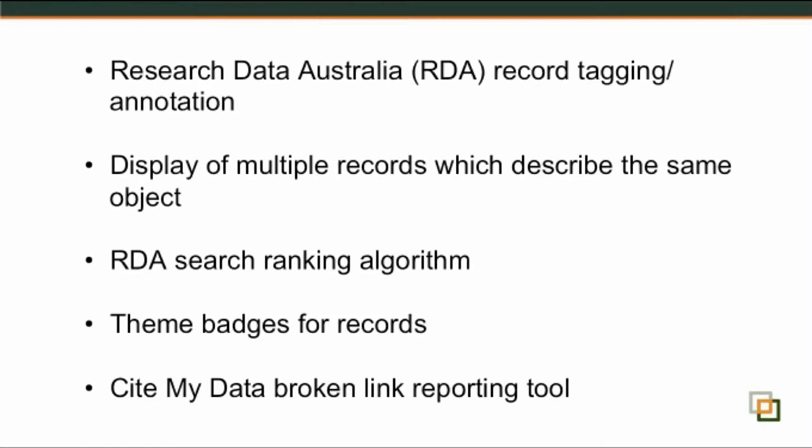So what I'll go over today is the Research Australia record tagging and annotation functionality, display of multiple records which describe the same objects — this is linking multiple records with the same identifiers. I won't go into the search ranking algorithm, but we've done some tweaks to the search in Research Australia to make it more accurate, so you should notice some improvements there. Very quickly into the theme badges for records, and a bit of information about the Site My Data Bracken Link reporting tool.